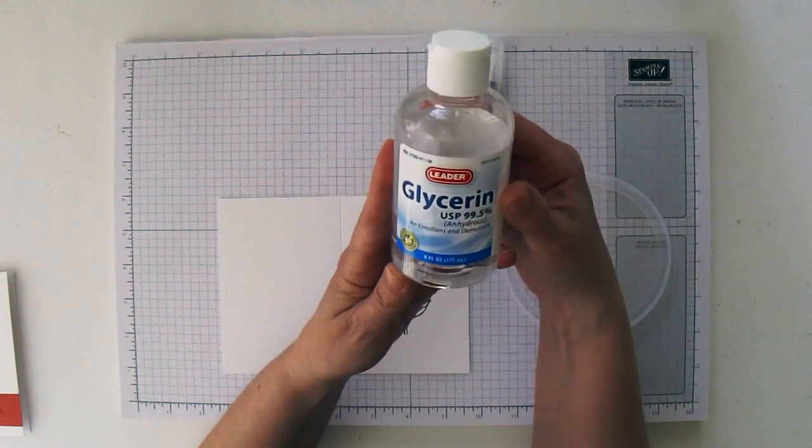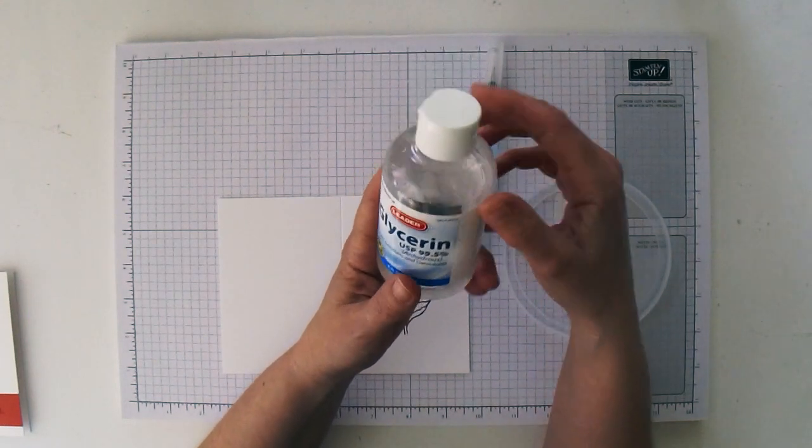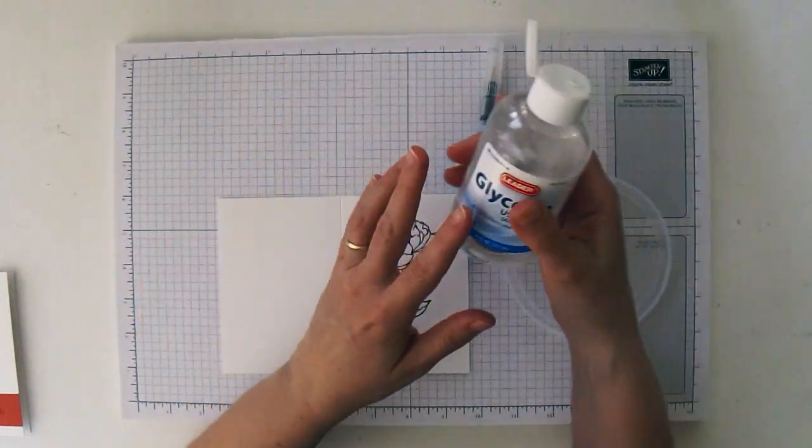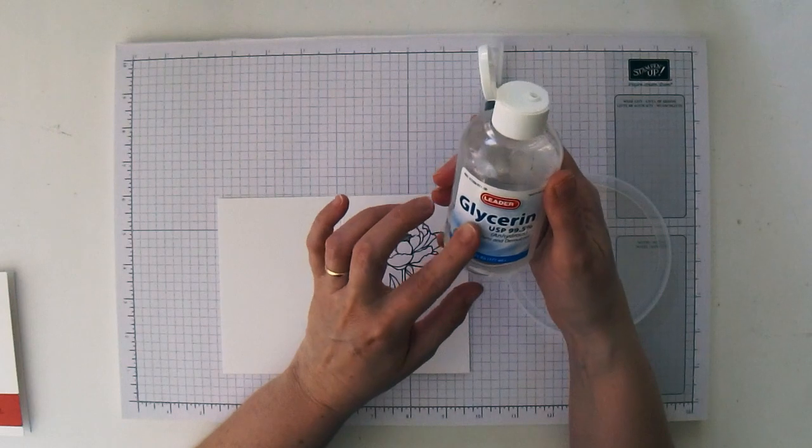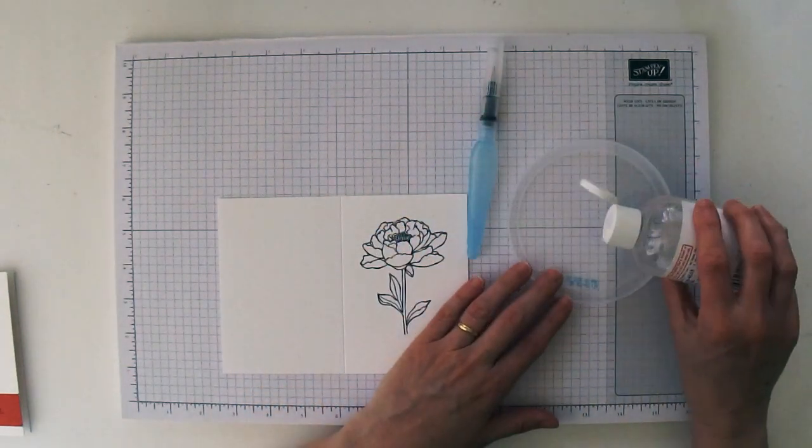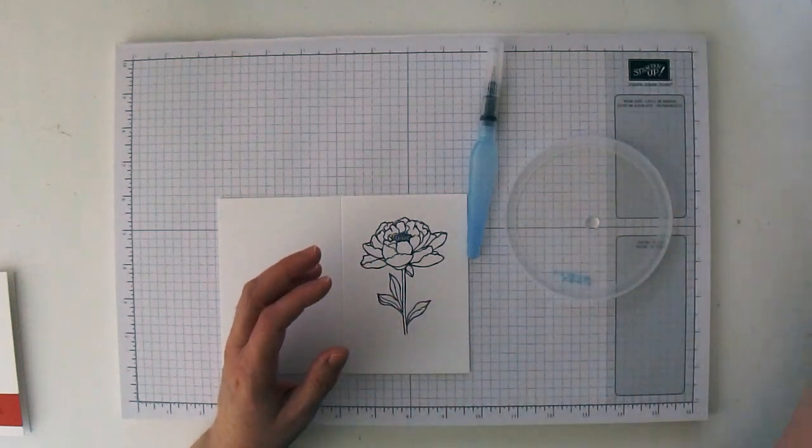So to start off with this is glycerin. I got it at the pharmacy for around seven dollars and we use hardly any of it so you can definitely if you can find a smaller bottle of this you can definitely go smaller. I like to put like a drop of that glycerin right in the center there.